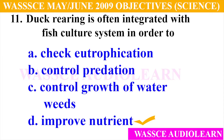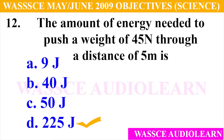Question 11: Duck rearing is often integrated with fish culture systems in order to — A. Check eutrophication, B. Control predation, C. Control growth of water weeds, D. Improve nutrient. And the answer is D, improve nutrient.